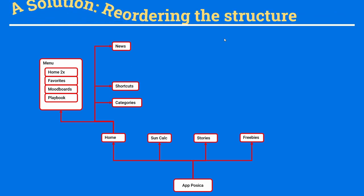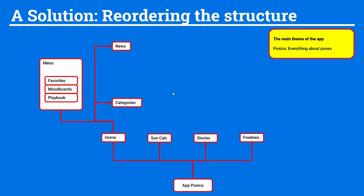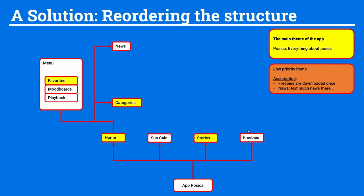Now let's jump into the solution. We have 'home' appearing a second time along with shortcuts — we can remove those since they won't be needed if the information architecture is good. Looking at the main theme of the app — it's all about poses — let's highlight what's connected to this: the stories, the home tab with categories and favorites. Then we have low priority items like freebies and news. My assumption is that freebies are downloaded once and then the tab is not used anymore, and news take up space without being super helpful.